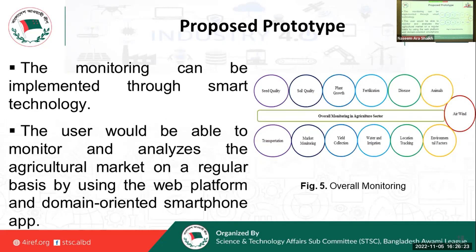Overall monitoring will also cover seed quality, seed quantity, plant growth, fertilization, disease, animals, air, wind, environmental factors and location tracking, water and irrigation, yield collection, market monitoring, and transportation — everything will be monitored by the remote IoT-based system.